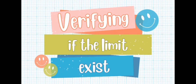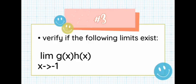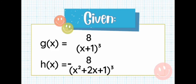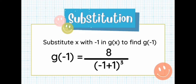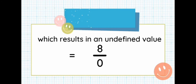Good day everyone! This is Cristaleza Sidera, and I am here to verify if the limit on number 3 exists. On number 3, we have the limit of g of x and h of x as x approaches negative 1. The given are: g of x equals 8 over x plus 1 cubed, and h of x equals negative 8 over x squared plus 2x plus 1 cubed. First, we substitute x with negative 1 into g of x. So g of negative 1 equals 8 over negative 1 plus 1 cubed, which equals 8 over 0 — an undefined value.